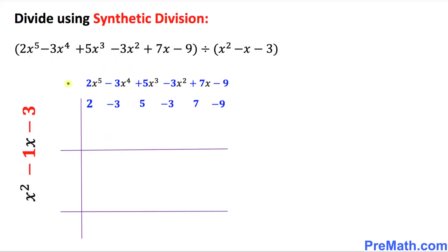The next step is really crucial. You see these coefficients of this dividend — 2, I just put it down by itself over here. The next coefficient of x to the power 4 moves down over here. Likewise, this is positive 5, negative 3 moves down over here, this is positive 7, and this is negative 9.